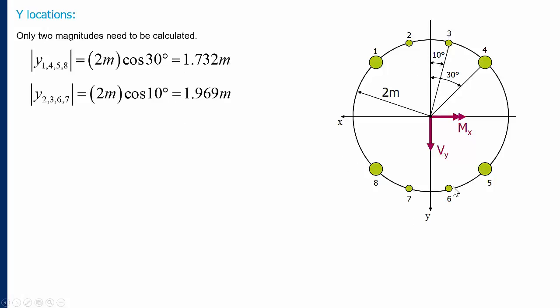For booms 2, 3, 6, and 7, we do the same analysis, but now our angle is 10° rather than 30°. So this vertical distance is the radius times cosine of 10°, which is almost the full radius — in fact, 1.969 meters.